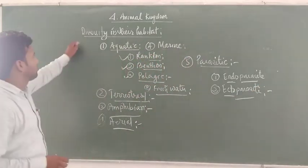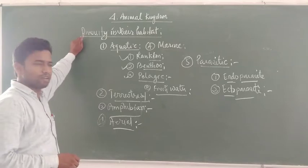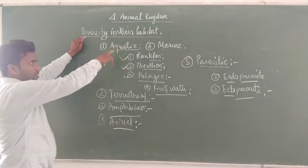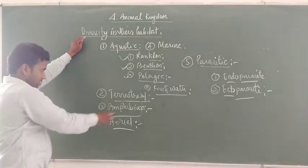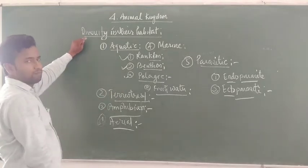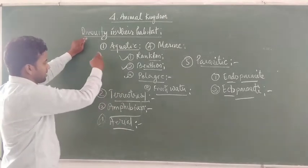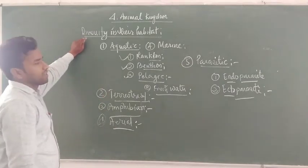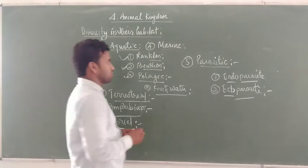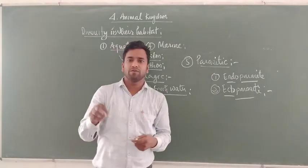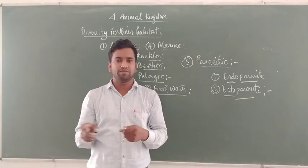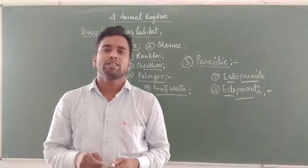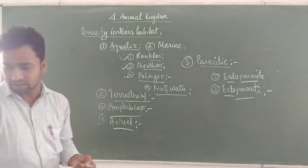This is the diversity in their habitats. Animals belonging to the animal kingdom have the following types of habitats: aquatic, terrestrial, amphibian, aerial, and parasitic. Subterranean animals are also found - they form burrows inside the soil and live there. Earthworms and some snakes are considered subterranean animals.